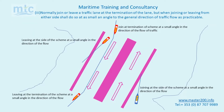Rule 10b3. Normally join or leave a traffic lane at the termination of the lane, but when joining or leaving from either side shall do so at as small an angle to the general direction of traffic flow as practical. The red vessel can be seen joining and leaving at the termination of the scheme at as small an angle as possible. The red vessel is also leaving at the side of the scheme at as small an angle as possible. The blue vessel is joining the scheme at the side at as small an angle as possible.